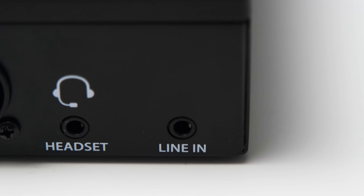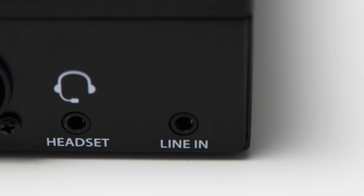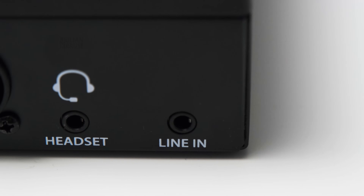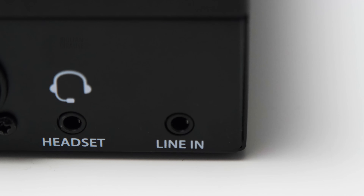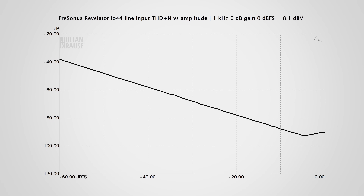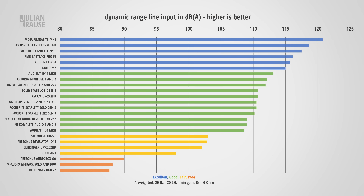Next up let's have a look at the stereo line in on the IO44. The performance is not too different from the mic input. The frequency response is pretty much a straight line in the audible range, which is exactly what we want to see. In terms of distortion there is again just a hint of it at minus 90 dB, which I would argue is not audible anyway. The dynamic range with about 103 dB is not the greatest but already very usable, and it is highly unlikely that you will hear this noise.